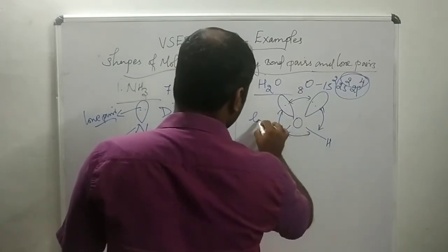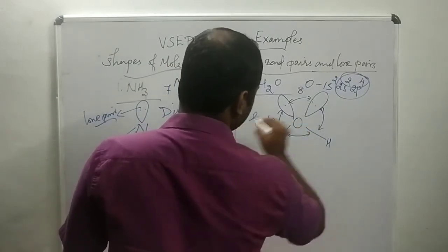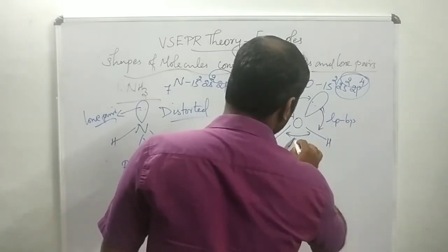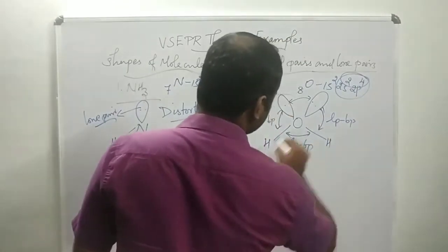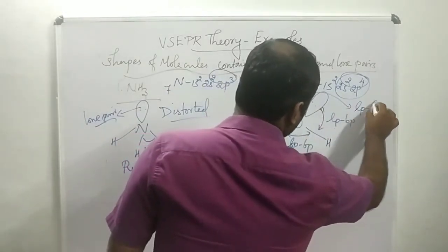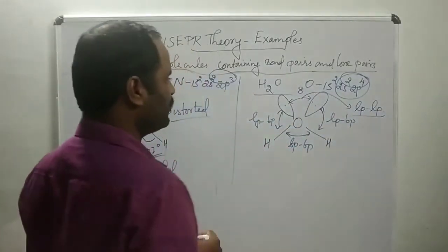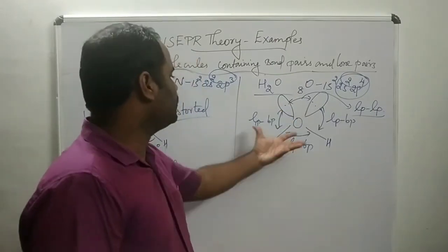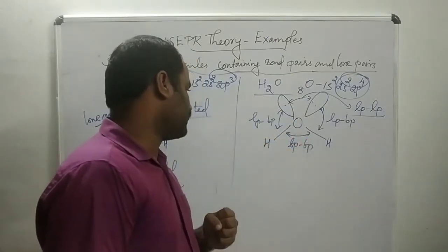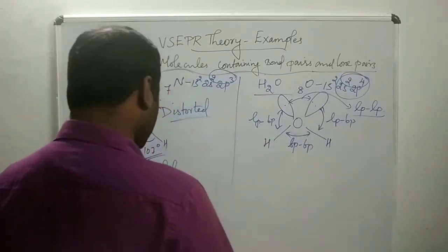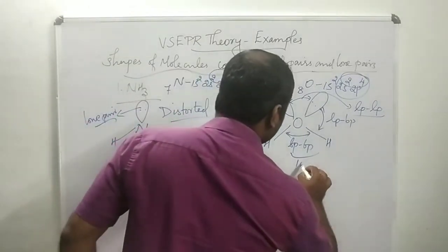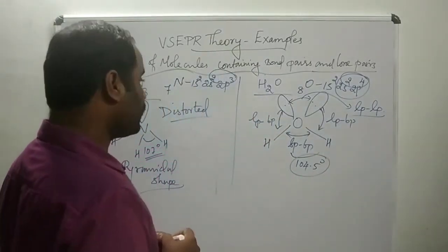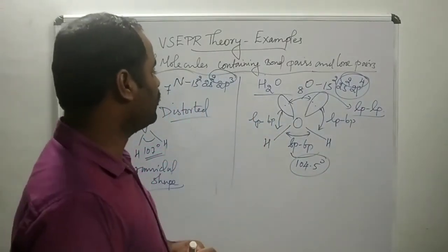In the water molecule there are different types of repulsion: lone pair–bond pair repulsion and bond pair–bond pair repulsion, as well as lone pair–lone pair repulsion. Due to the presence of these two lone pairs, the two hydrogen atoms are pushed closer together, resulting in a bond angle of 104.5 degrees.